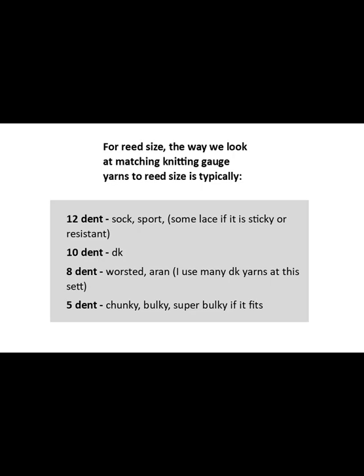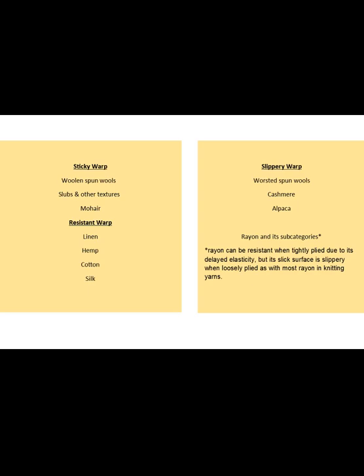The word 'beat,' by the way, is often a misnomer when your real intention might be a loving tap to place one pick next to the other. Further, I advise against beating the same pick multiple times because you're more likely to create stiff fabric and frowning edges — these are selvedges that sink when beating from various directions. For reed size, the 12-dent is for sock, sport, and some lace if it's sticky or resistant. The 10-dent is great for DK. The 8-dent is for worsted and aran — I use many DK yarns at this sett. The 5-dent is for chunky, bulky, and super bulky if it fits.